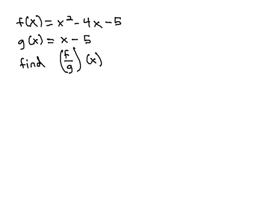Here, we have f(x) = x² - 4x - 5, g(x) = x - 5, and we're going to find (f/g)(x), which simply means we have f(x) on top of the g(x) function.